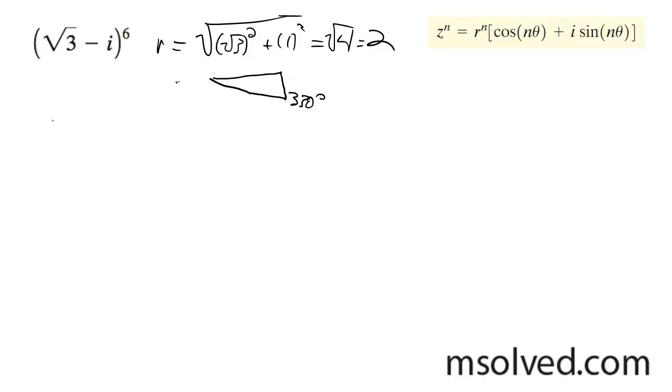So we can go ahead and write out our equation here. We can just do 2 raised to the 5th. And then we get cosine 330 times 5 plus i sine 330 times 5, plus 32.